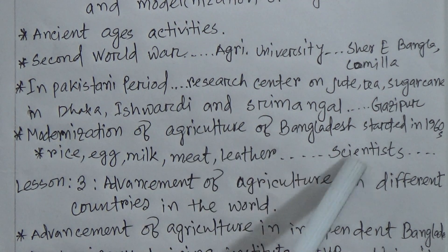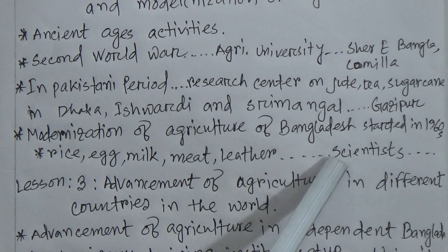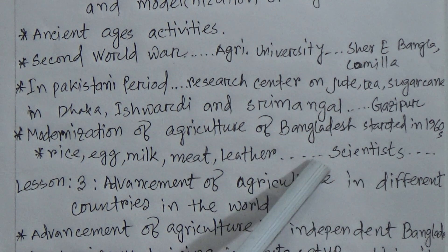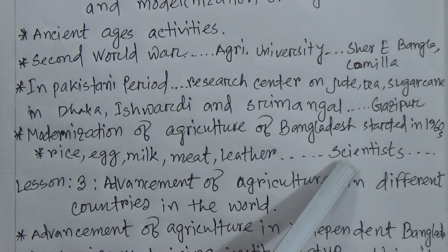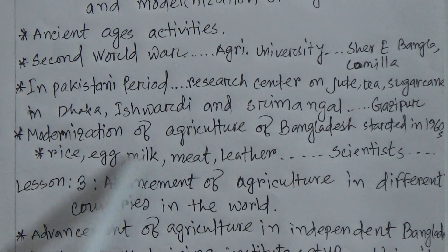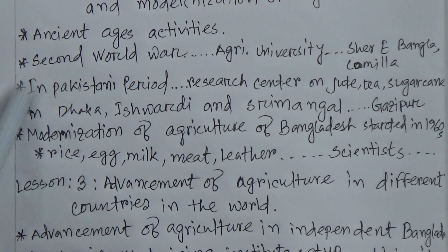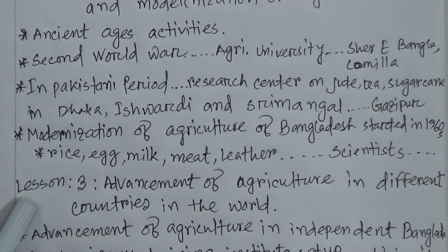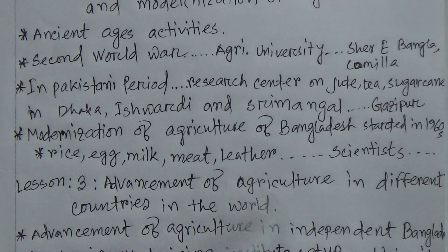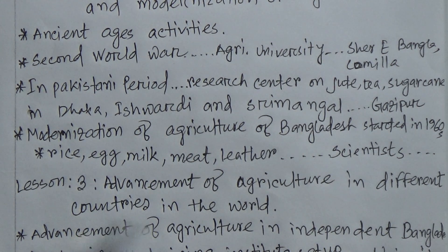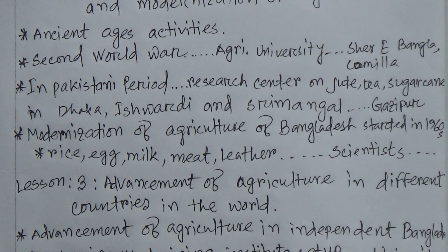This was made possible through scientists' contributions. At that time, scientists were able to produce updated, developed, or hybrid seeds, and as a result farmers were able to produce a great amount of crops. This is about Lesson 2. Now we will discuss Chapter 1, Lesson 3 — the advancement of agriculture in different countries of the world, including our neighboring countries India, China, and Vietnam.